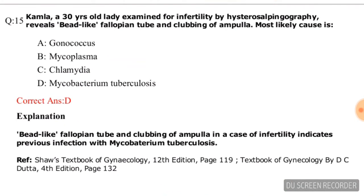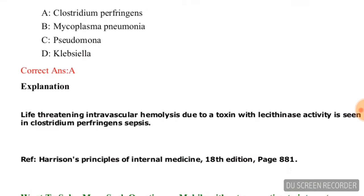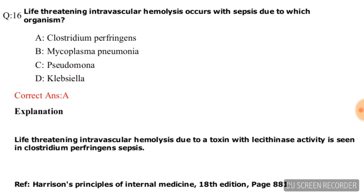Next question: Kamla, a 30-year-old lady examined for infertility by hysterosalpingography, reveals beaded fallopian tube and clubbing of ampulla. The most likely cause is — gonococcus, mycoplasma, chlamydia, or Mycobacterium tuberculosis? The correct answer is Mycobacterium tuberculosis, option D.